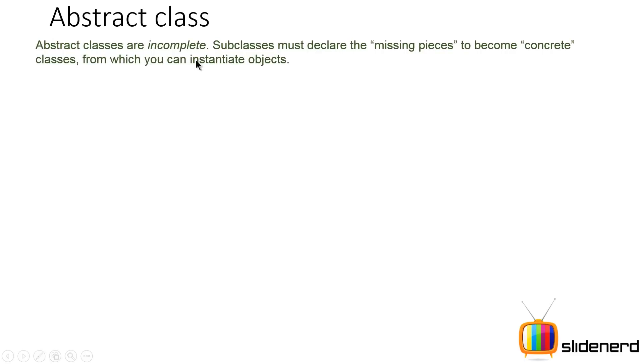So first, like I said, abstract classes are incomplete. Subclasses, that is the inherited members, they should put the missing pieces so that they become complete and you can create objects of the subclasses only.